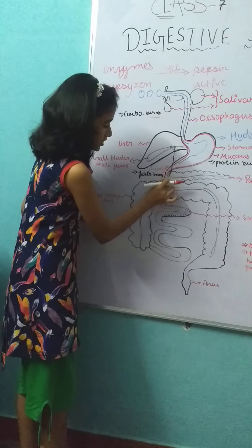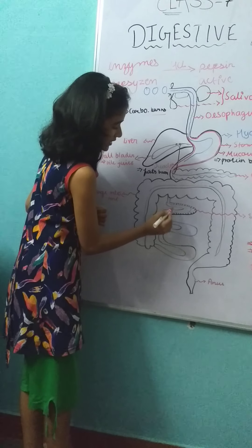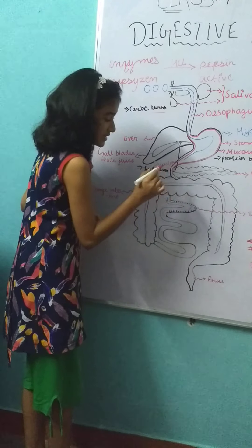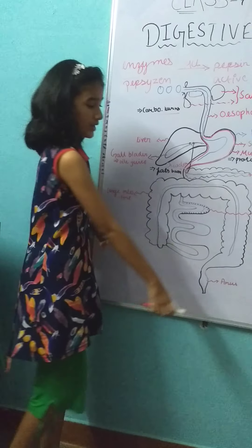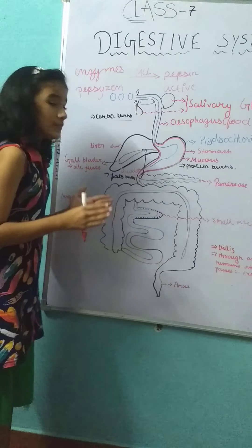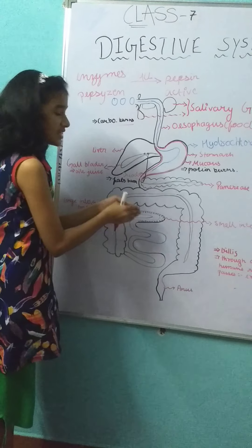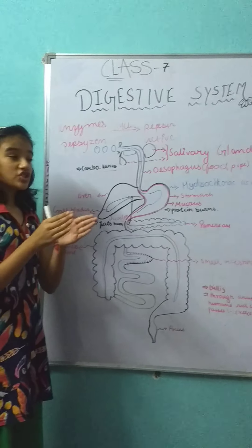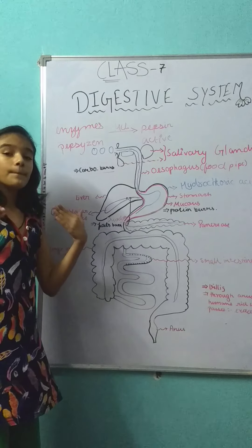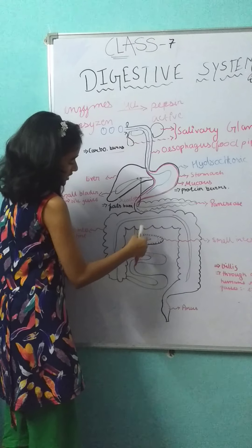After the duodenum, the food passes to the small intestine. The small intestine contains small hairs known as villi. The villi absorb the digested food and contain blood vessels which transfer the food to the whole body, providing nutrients.